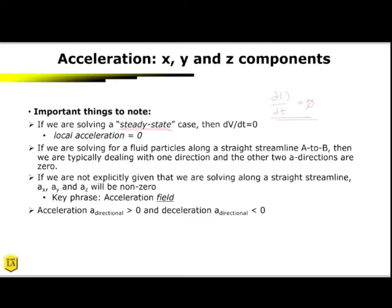If you're solving for fluid particles along a straight streamline, then you're typically dealing with one direction and the other two directions are zero. So this would be, if you're going from, again, a to b along the x-axis, that would mean that your v component is zero and your w component is zero.